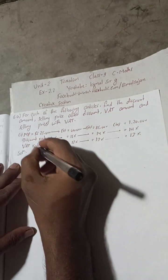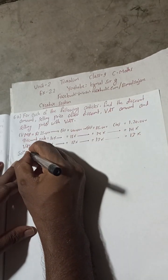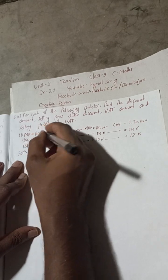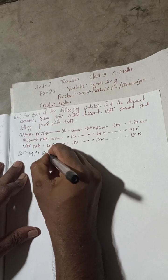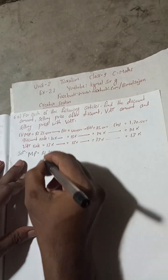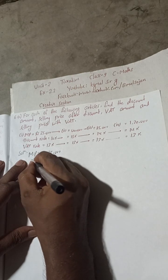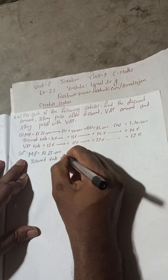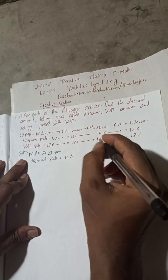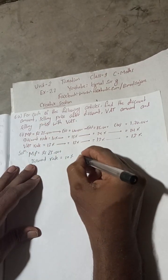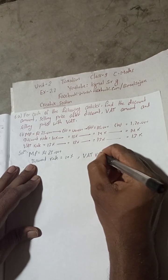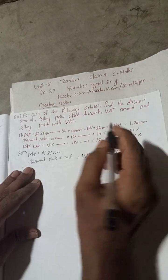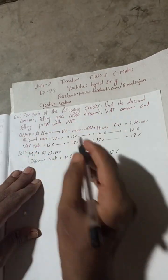Now we have to find the discount. Here MP — marked price — is equal to Rs 25,000. Discount rate is equal to 10%, and VAT rate is equal to 13%.